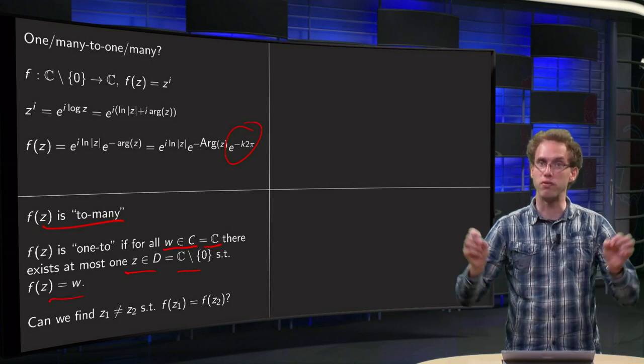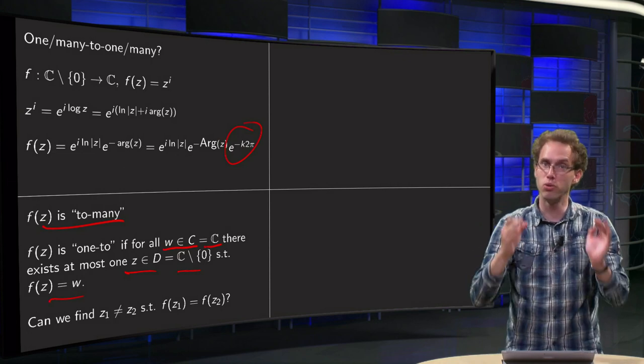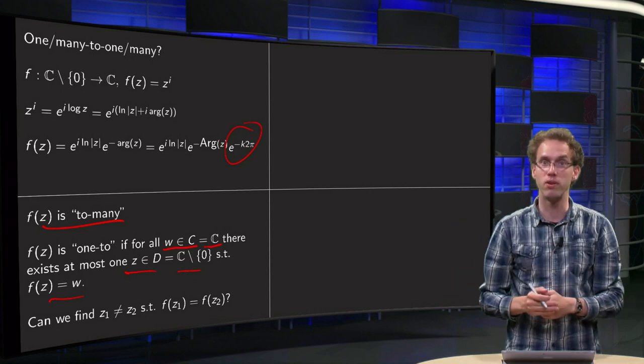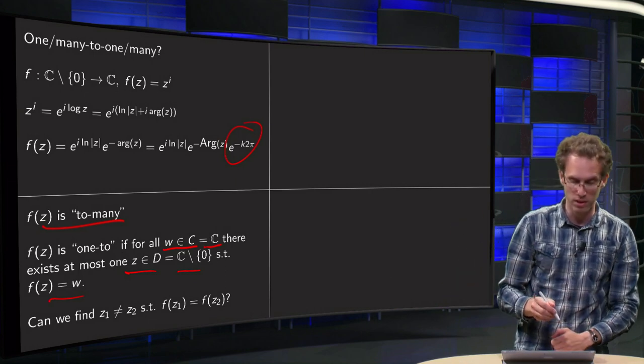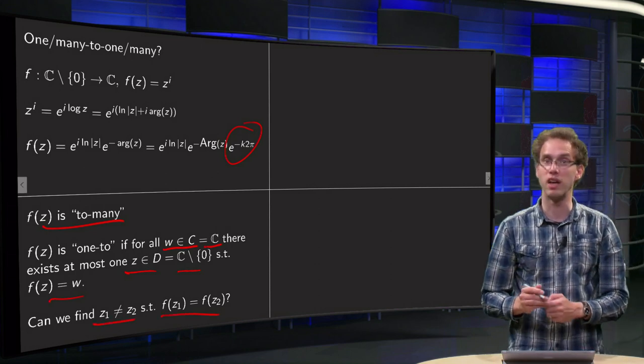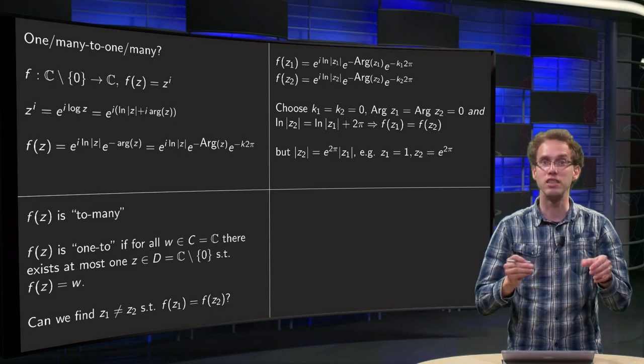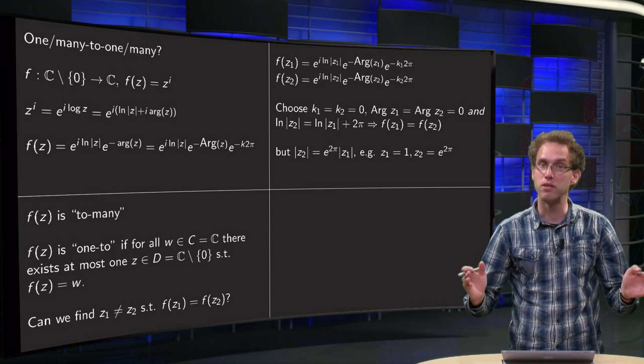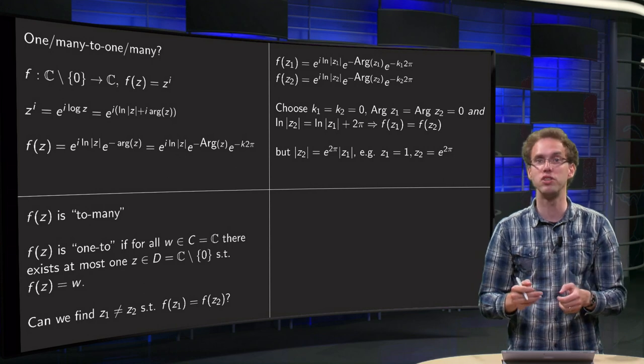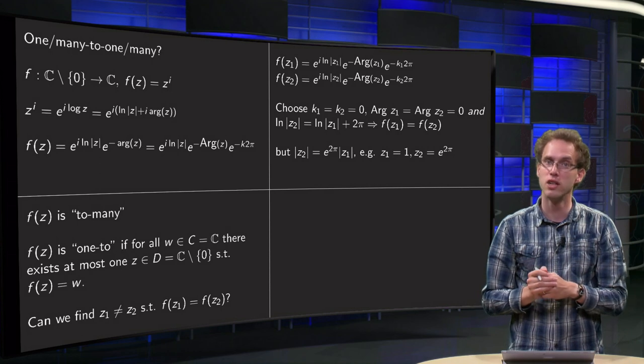So it's not possible to have two different values mapped to the same value. Now we wonder can we find two different values, z1 and z2, which map to the same value? So we are looking for two values such that f(z1) equals f(z2). If we can find many values, we have a many-to function. If we cannot do that, we have a one-to function. Let's try.